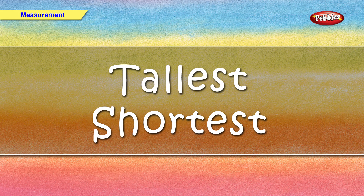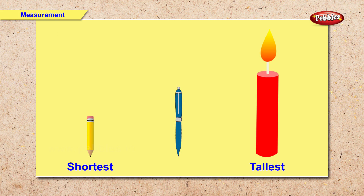Now we will see tallest and shortest. Here we have a pencil, a pen and a candle. So what is the tallest? Right. Candle is the tallest. And what is the shortest? Right. Pencil is the shortest.